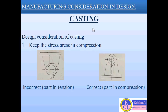First design consideration of casting is to keep the stress area in compression. Generally, cast iron has more compressive strength than its tensile strength. So when the tensile stress is unavoidable, we can consider a clamping device such as a tie rod or bearing cap. These clamping devices relieve the component from the tensile stress.